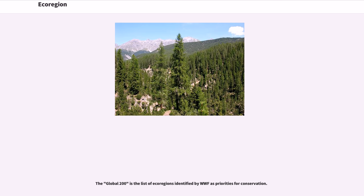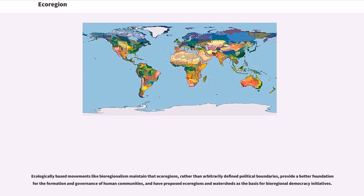The Global 200 is the list of ecoregions identified by WWF as priorities for conservation. Ecologically based movements like bioregionalism maintain that ecoregions, rather than arbitrarily defined political boundaries, provide a better foundation for the formation and governance of human communities, and have proposed ecoregions and watersheds as the basis for bioregional democracy initiatives.